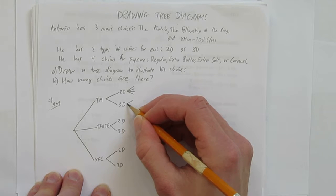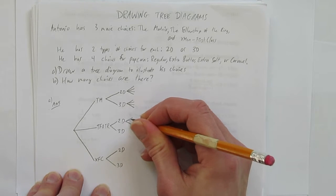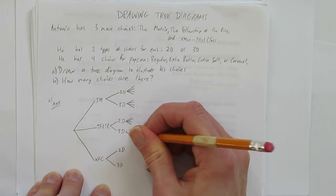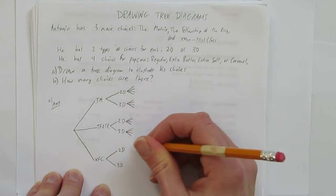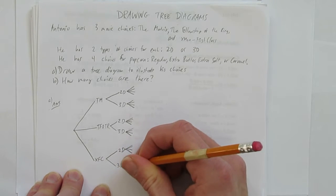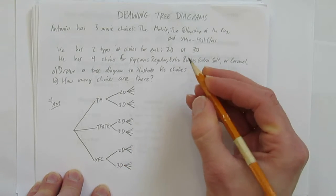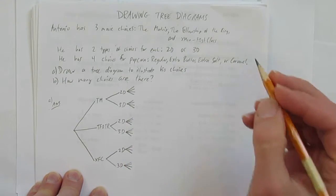We're going to label each one. I'm just going to draw them first. Again, it doesn't have to be perfect, but they should be more or less lined up. And we're going to have four branches coming out of each of the 2Ds and each of the 3Ds. And these represent the four choices of popcorn. So they are regular, extra butter, extra salt, or caramel.